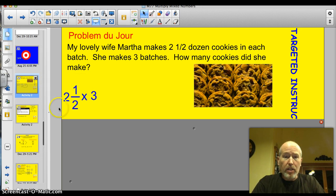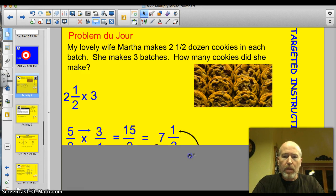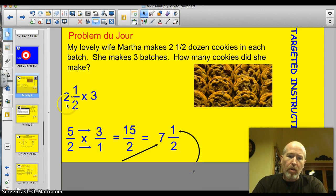Well, you've got two and a half dozen times three batches. What do we do? Well, we've got to change that mixed number into an improper fraction. So two times two is four plus one is five. So two and a half is the same as five halves. We'll go over that in a little bit. Then you multiply it by three, which is three over one.